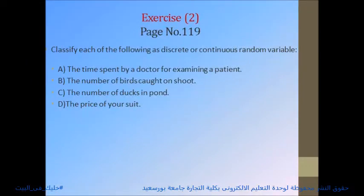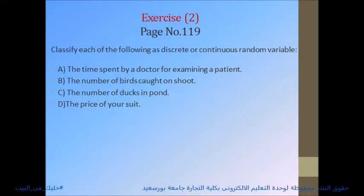Exercise number 2, page number 190: Classify each of the following as a discrete or continuous random variable. Number A: the time spent by a doctor examining a patient. Since 'time' takes any value within an interval, it is a continuous random variable.